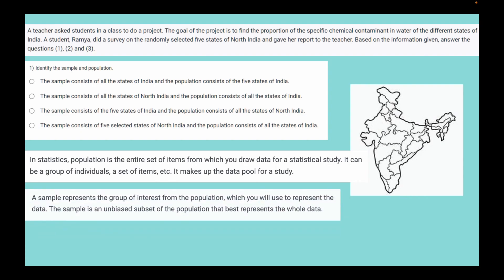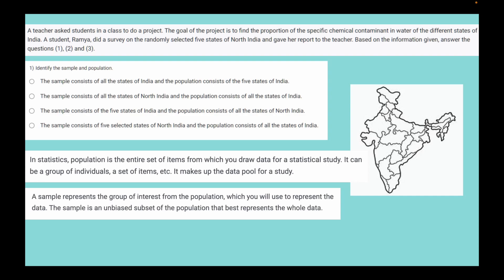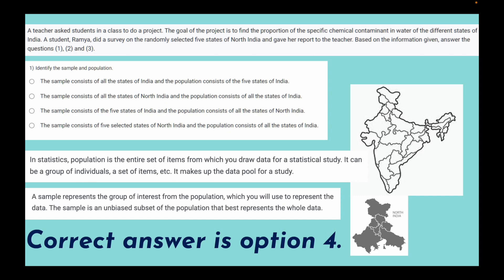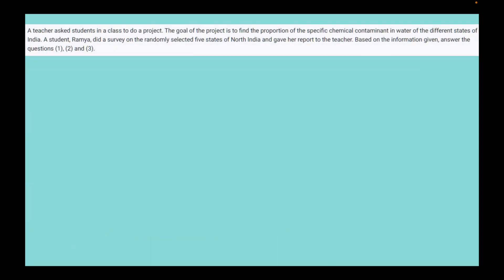A sample represents a group of interest from the population that you use to represent the data — it is an unbiased subset of the population that best represents the whole data. Here, Ramya randomly selected five states of North India for her survey, so we can conclude that the sample is those five randomly selected states of North India. Therefore, the correct answer is option 4: the sample consists of five selected states of North India and the population consists of all the states of India.